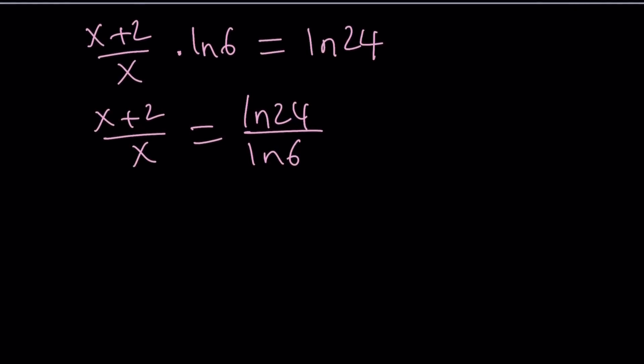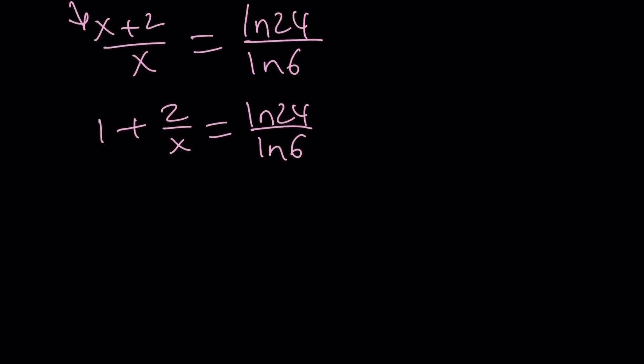And that is actually to split up this fraction. I can write it as 1 plus 2 over x equals ln 24 over ln 6. And then subtract 1 from both sides. ln 24 over ln 6 minus 1. But 1 can be written as ln 6 over ln 6. And this becomes ln 24 minus ln 6 all over ln 6.